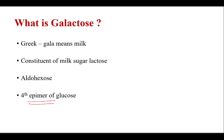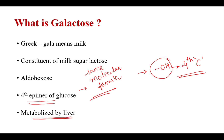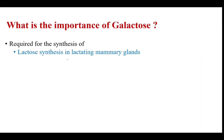Galactose is the C-4 epimer of glucose. Epimers are a type of isomers that have the same molecular formula but differ in structural arrangement. Glucose and galactose differ in the position of the hydroxyl group at the fourth carbon. Galactose is metabolized by the liver.